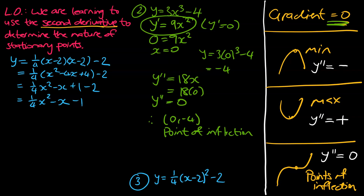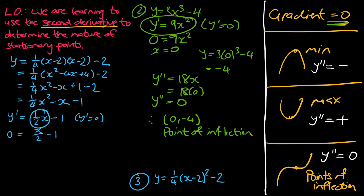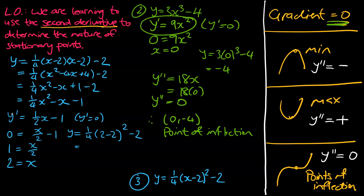Now we differentiate. y dash equals one quarter times 2, which is one half of x, and x becomes minus 1. Setting y dash equal to zero: 0 equals x divided by 2 minus 1. Moving the minus 1 across gives 1 equals x divided by 2, so x equals 2. To find the corresponding y value, we substitute 2 back into the original equation: y equals one quarter times (2 minus 2) squared minus 2. Two minus 2 is 0, 0 squared is 0, 0 times one quarter is 0, so y equals negative 2.